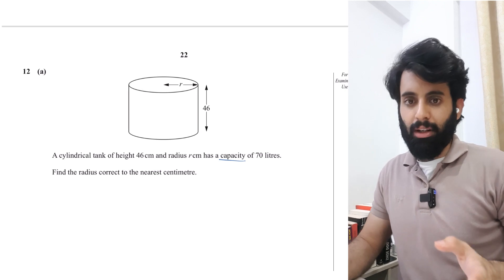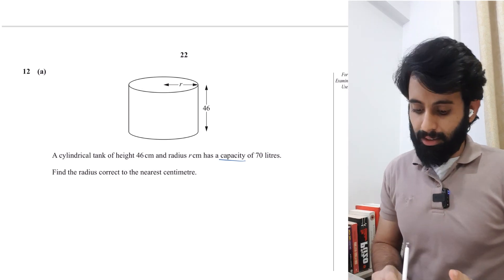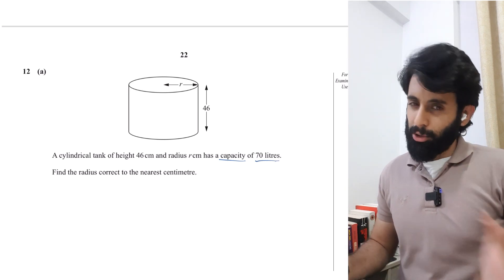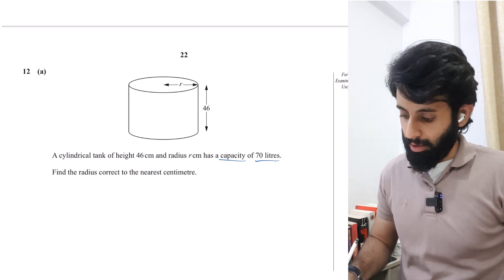If I were you, I'd underline the word capacity - 70 liters. Find the radius correct to the nearest centimeter. In simple terms, you're given the volume and the height of a cylinder and you're asked to find the radius. But the catch is that the volume is given to you in liters.